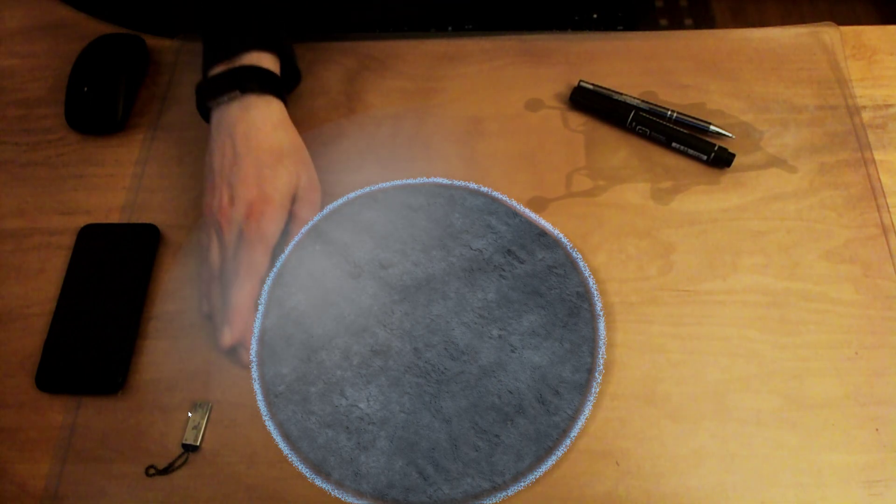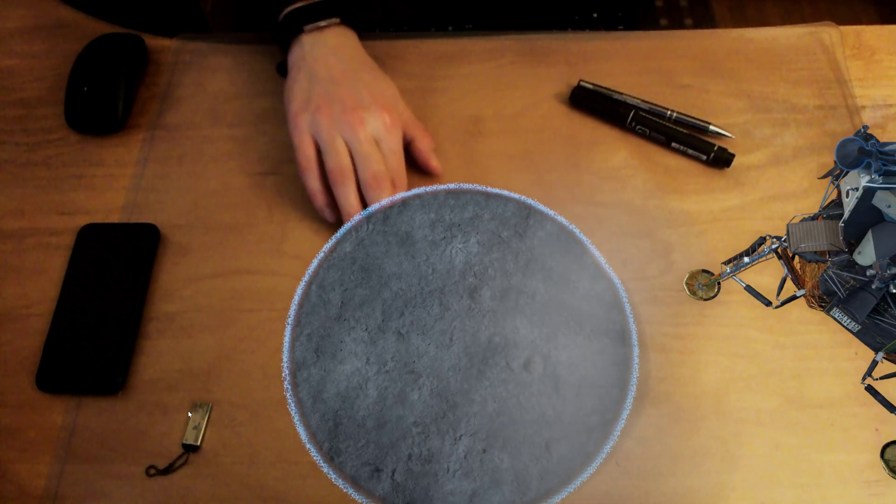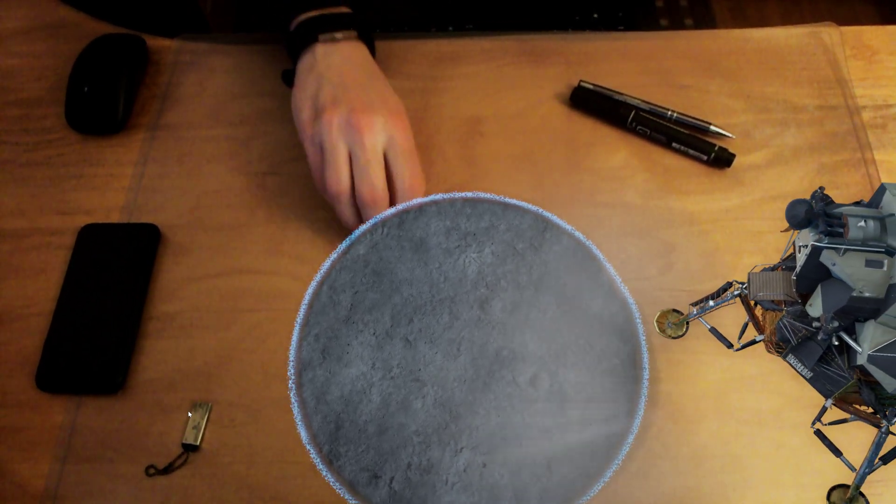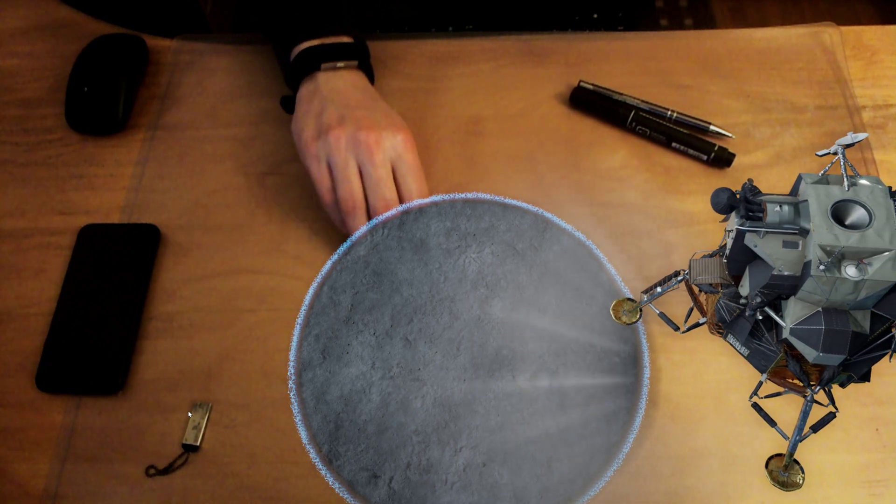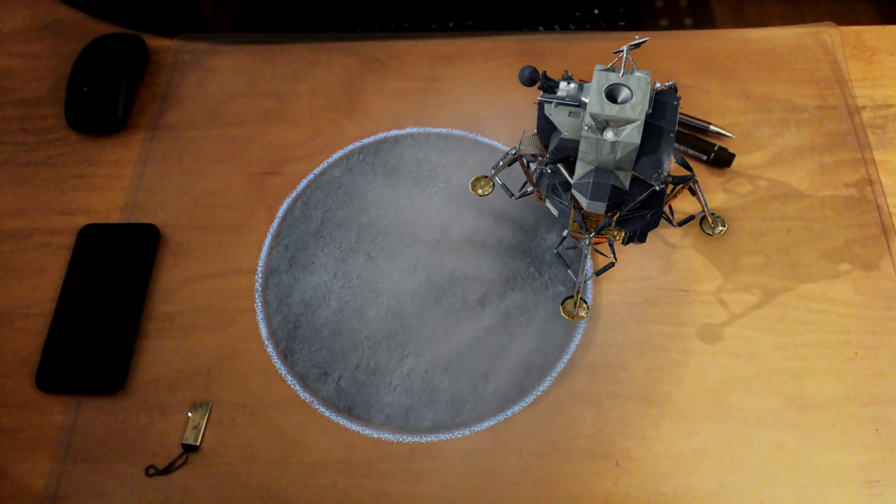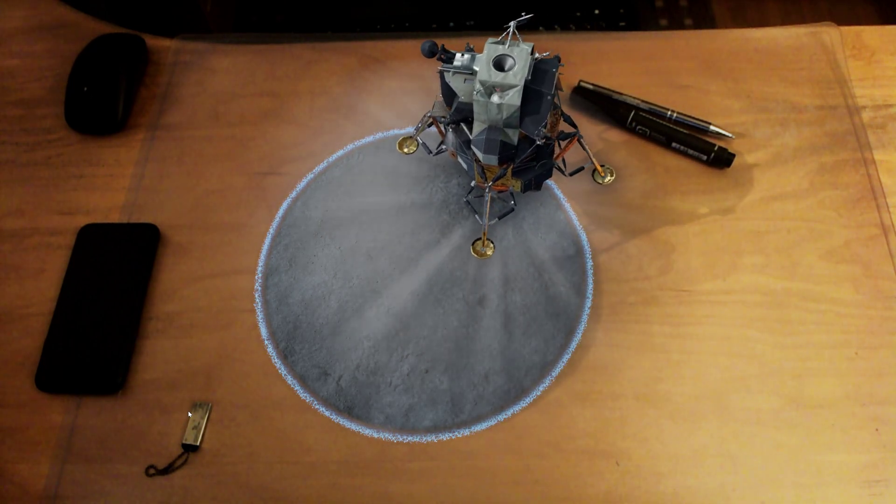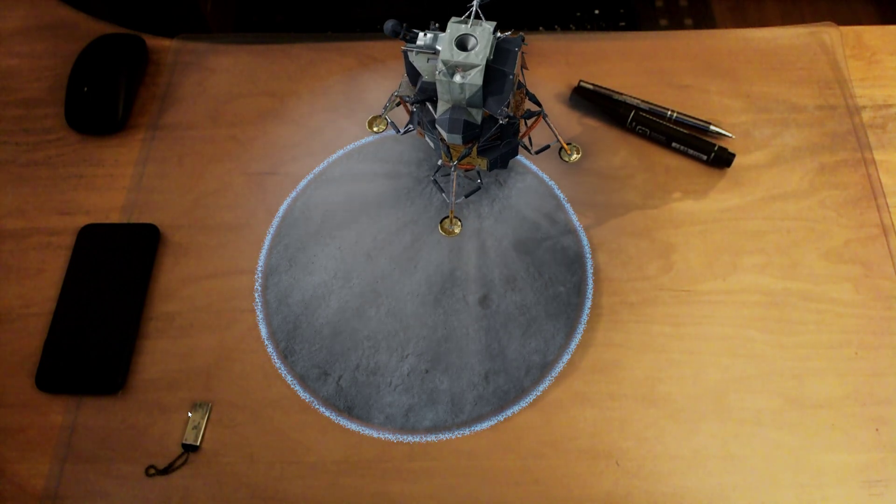Look up to see the lunar module make its final descent. You'll notice the tricky part of the descent. There were computer errors as well as giant craters and huge boulders which had to be avoided in order to find a safe place to land. As they neared the Moon's surface, dust blown by the engine made judging the motion of the craft extremely difficult.